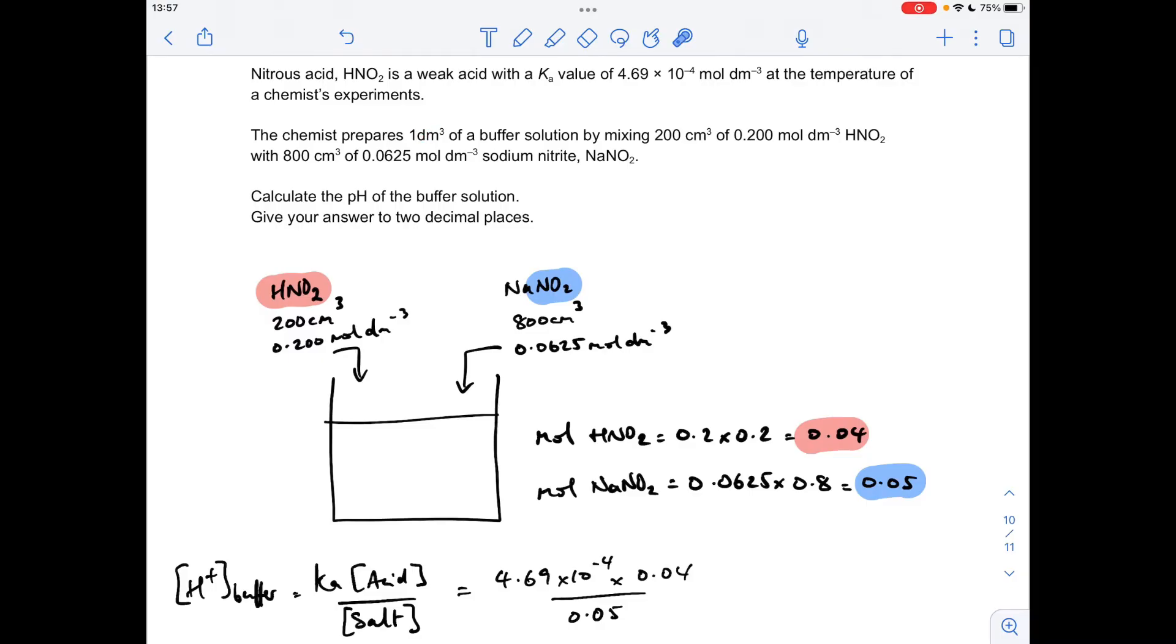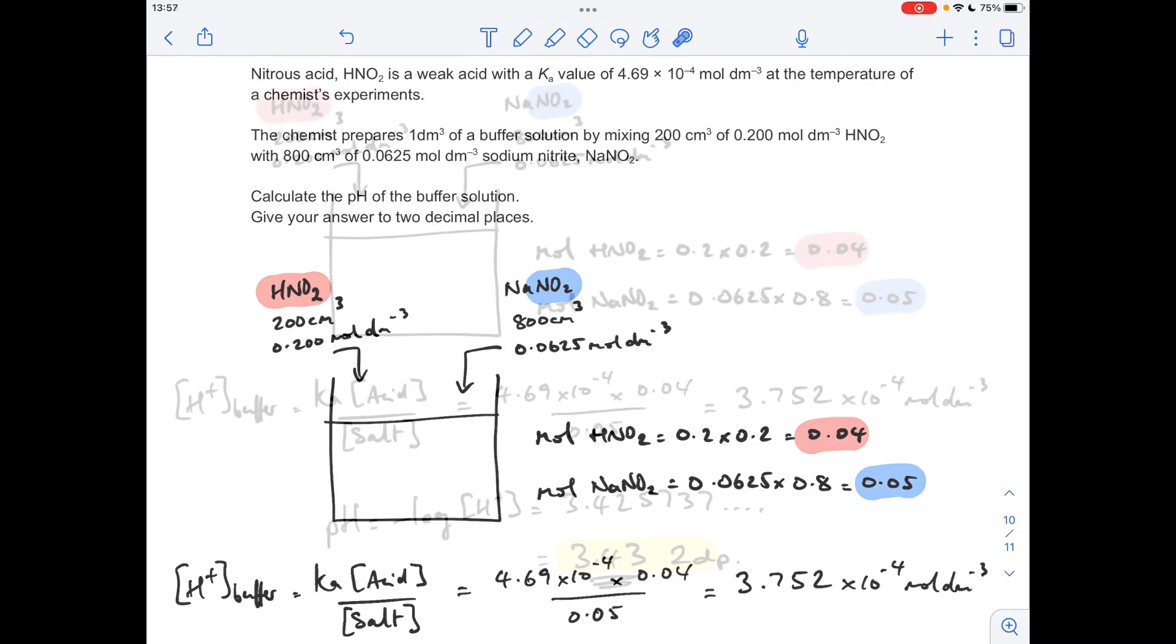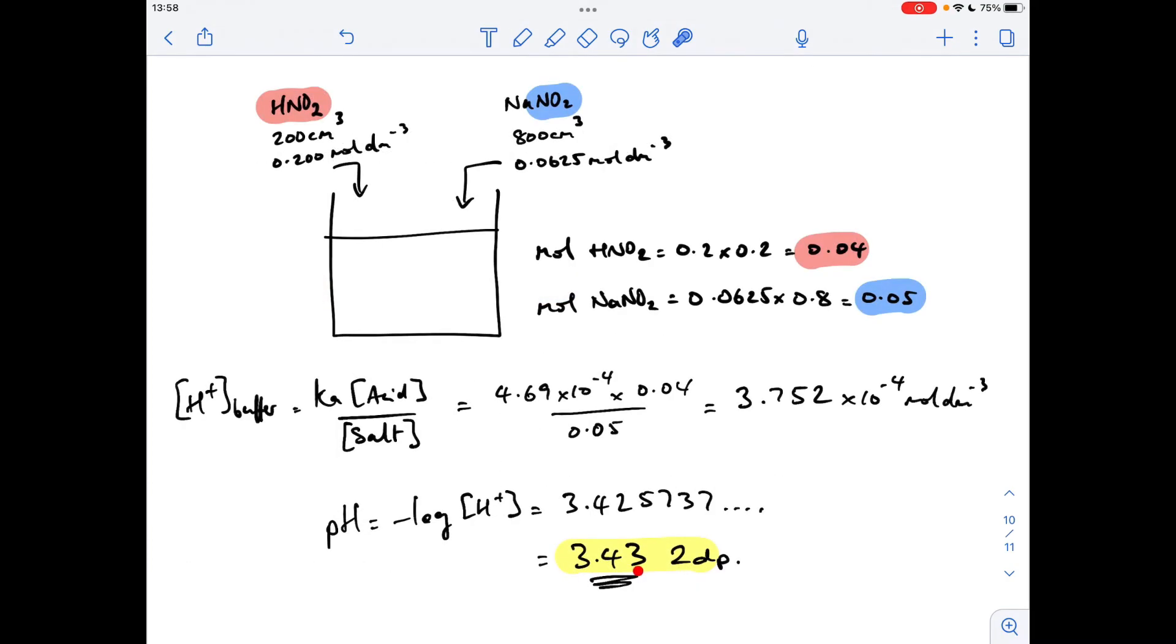So that gives us an H plus concentration in the buffer of 3.752 times 10 to the minus four moles per decimeter cubed. So all we need to do now is minus log this and give our answer to two decimal places. And that comes out at 3.43.